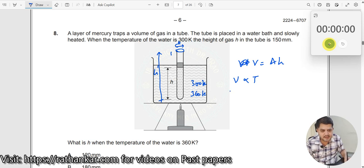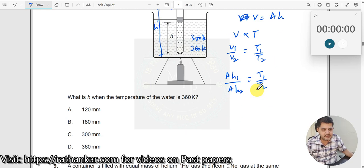So therefore, what we will do is we will write V1 by V2 is equal to T1 by T2, removing the proportionality constant. Now what is V1? A times H1 divided by A times H2 is equal to T1 divided by T2. Now let us substitute all the values to get the answer. A anyway cancels on both of them.